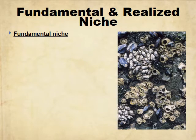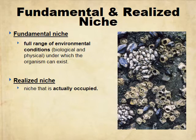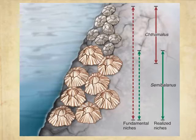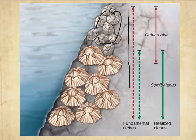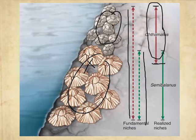Fundamental and realized niche relate to resource partitioning. Your fundamental niche is the full range of environmental conditions an organism could potentially live in — as humans, we could theoretically live anywhere in the world. Your realized niche is the niche actually occupied, which is usually narrower. Using barnacles as an example: the large barnacles occupy their entire fundamental niche because they're dominant, while the smaller barnacles get pushed to the upper portion of their fundamental niche — that restricted area becomes their realized niche.